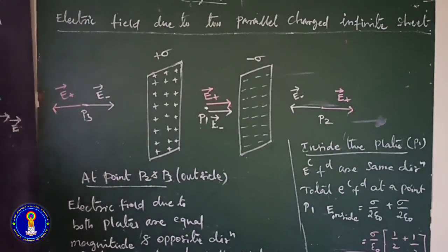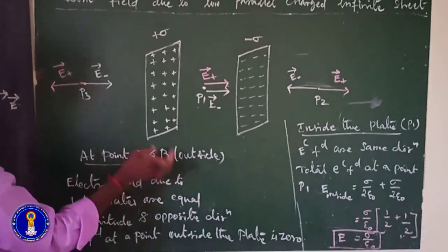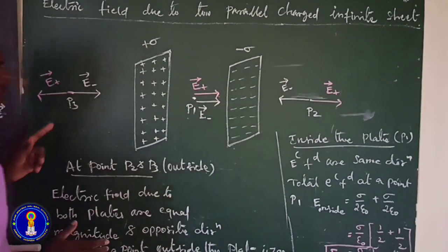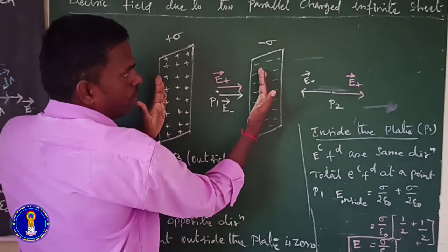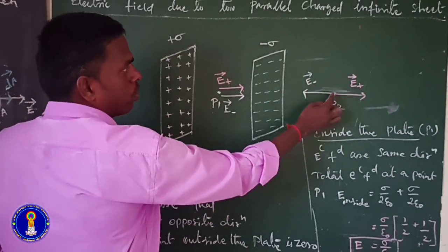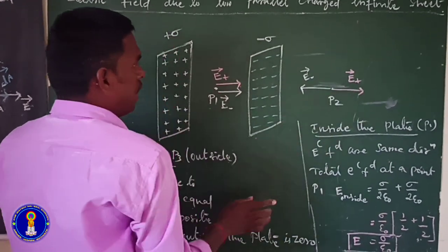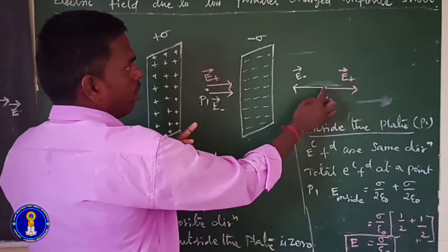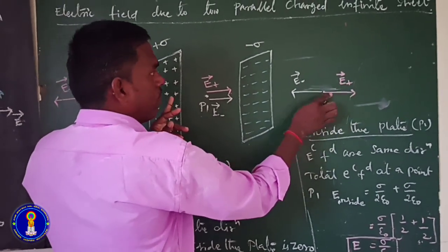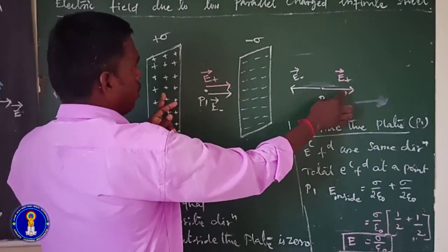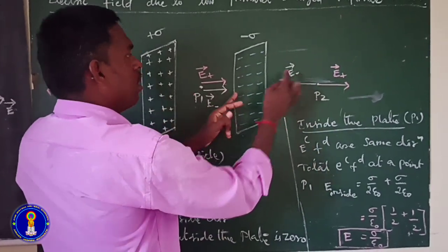The three points are: P1 inside the plate, P2 and P3 outside the plate. At point P2, E plus is the electric field due to positive charge, away from the charge, and E minus is the electric field due to negative charge.